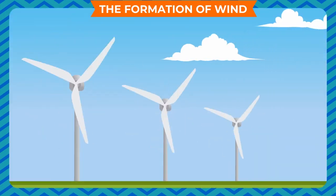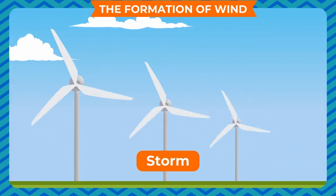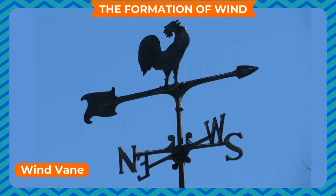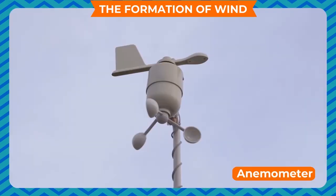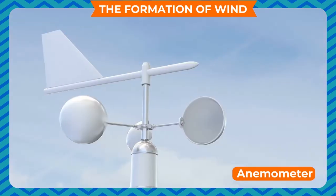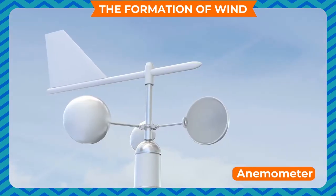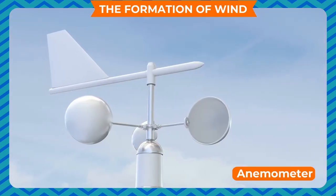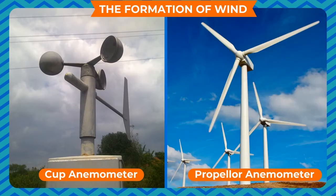If the speed of moving air is high, it is called a storm. The direction of wind is determined by a wind vane. The speed of wind is determined by an anemometer. Anemometers are of two types: cup anemometer and propeller anemometer.